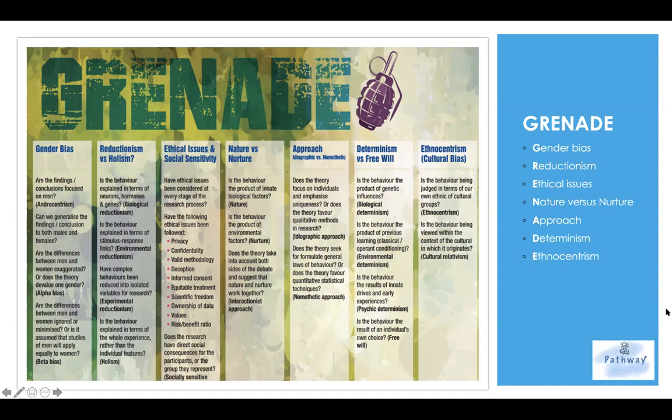The E is ethical issues and also social sensitivity. With ethics, the concerns involve privacy, confidentiality, validity and methodology, deception, informed consent, equitable treatment, scientific freedom, ownership of data, values, and the costs-benefits ratio. Research studies can also have direct social consequences for the participants or groups they represent — this is an example of socially sensitive questions.